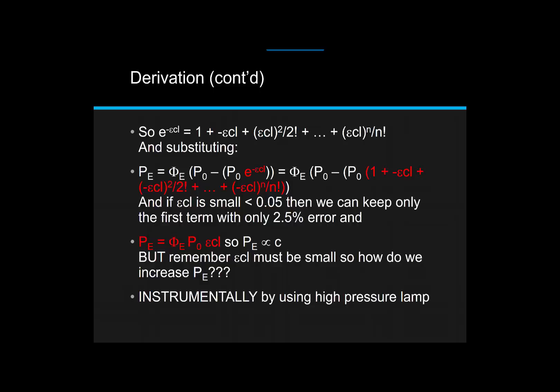Now what I want to do is substitute that expression, e to the minus epsilon Cl, expand it as a Taylor function, and substitute that into my Pe expression. If I do that, and I am highlighting for you here in red exactly what I am substituting and where I am substituting it, then I can basically, as long as my absorbance is relatively small, less than 0.05, I can keep the first two terms. So I'm not going to worry about that third term, even though I've written it into the expression, and I'm certainly not going to worry about the nth term. If I look at it very carefully and expand it, I can cancel out a few terms.